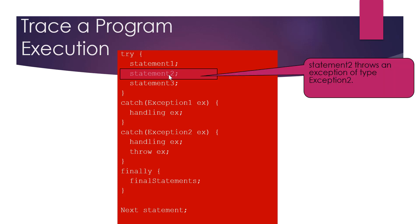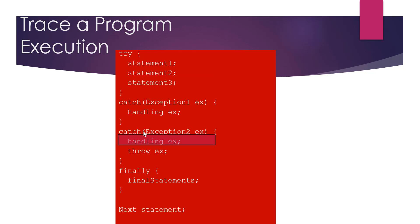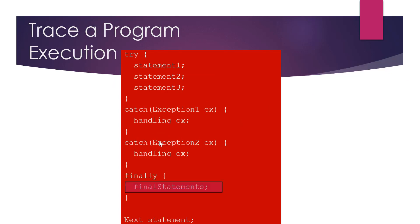If statement two throws an exception of type two, the first catch block will not be executed because it only catches exception type one. Exception two is caught by the second catch block, we handle it there, and then go to the finally block and then to the next statement. Notice that if an exception happened at statement two, statement three is not executed anymore — we threw an exception and jumped to the block that caught that exception, then to the finally block, and then to the next statement.